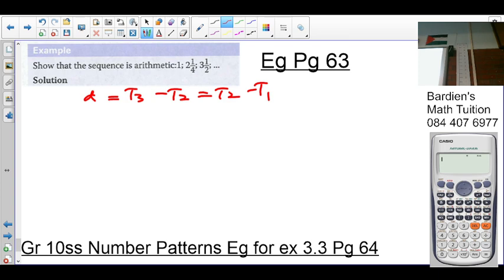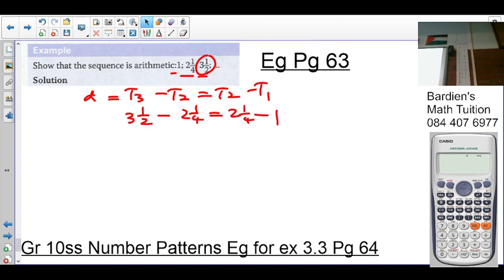Let's start. Your T1 is 1, T2 is 2 and a quarter, T3 is 3 and a half. So T3, which is 3 and a half, minus T2, which is 2 and a quarter. Is that equal to 2 and a quarter minus 1? Let's check. We put it in the calculator: 3 and a half minus 2 and a quarter gives you 5 over 4.